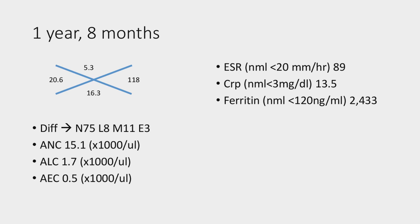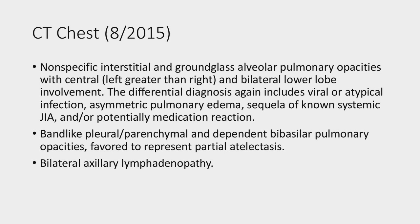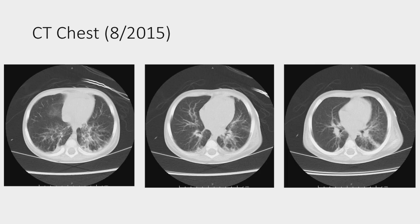The labs at that visit showed impressive leukocytosis, impressive anemia and thrombocytopenia, with high sed rate. She had very profound clubbing — visible on the thumb — and it has only gotten worse over time. The CT chest was read as non-specific interstitial and ground glass pulmonary opacities, bilateral, lower lobe involvement. They thought it was consistent with systemic onset JIA, specifically macrophage activation syndrome. She also had notable bilateral axillary lymphadenopathy.